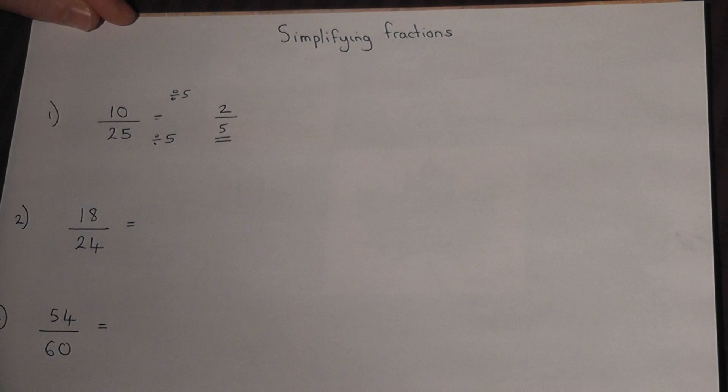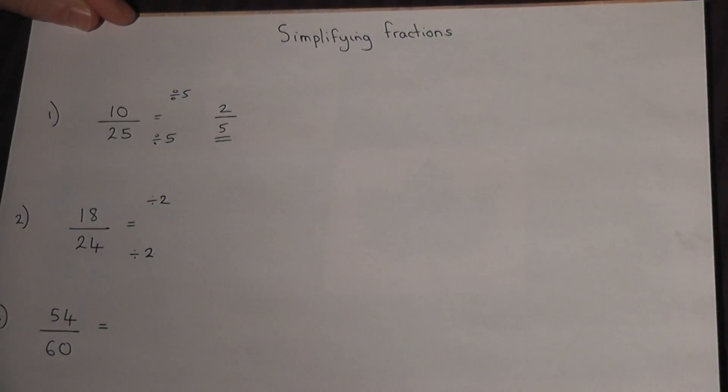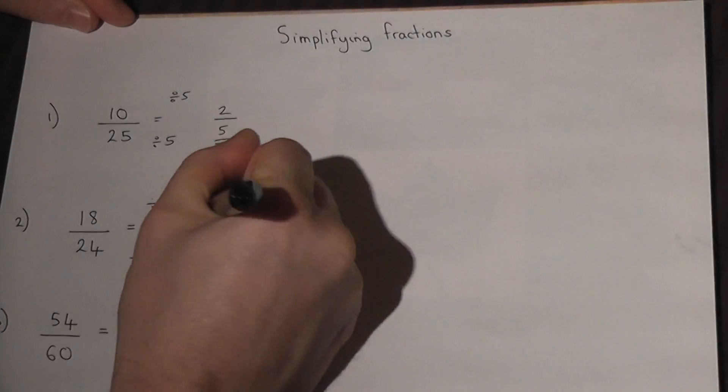Now in the second one, they are both even numbers, so I could divide the top and bottom by 2. 18 divided by 2 is 9, and 24 divided by 2 is 12.